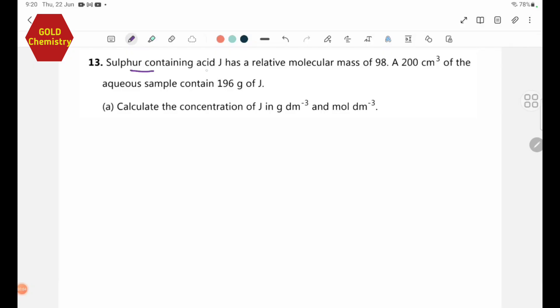Let's look at this. Sulfur containing acid Z has a molecular mass of 98, and 200 cm³ of the aqueous sample contains 196 grams. We need to calculate the concentration of Z in grams per dm³ and moles per dm³.